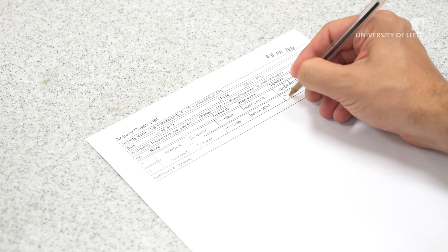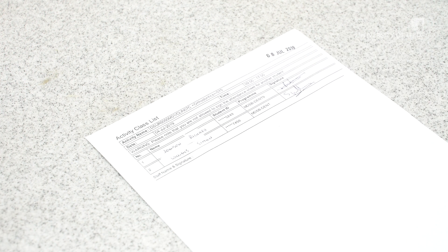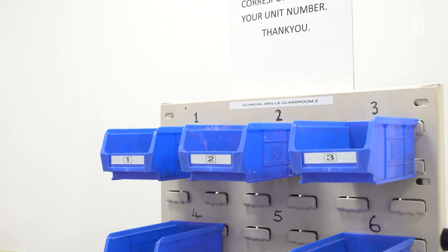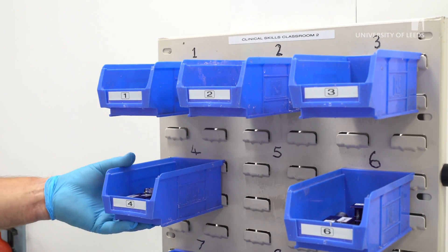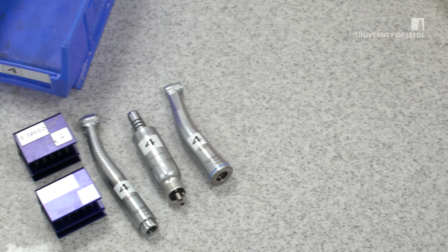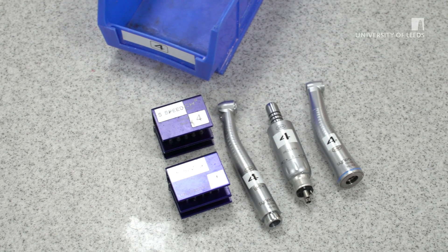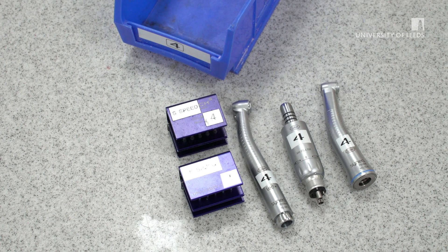On arrival, you must sign the attendance register. You will be asked to take a box from a rack which contains the handpieces for the session. Take the one with the same number as the unit you are sitting at. The box will contain high speed and low speed burs and high speed and low speed handpieces.